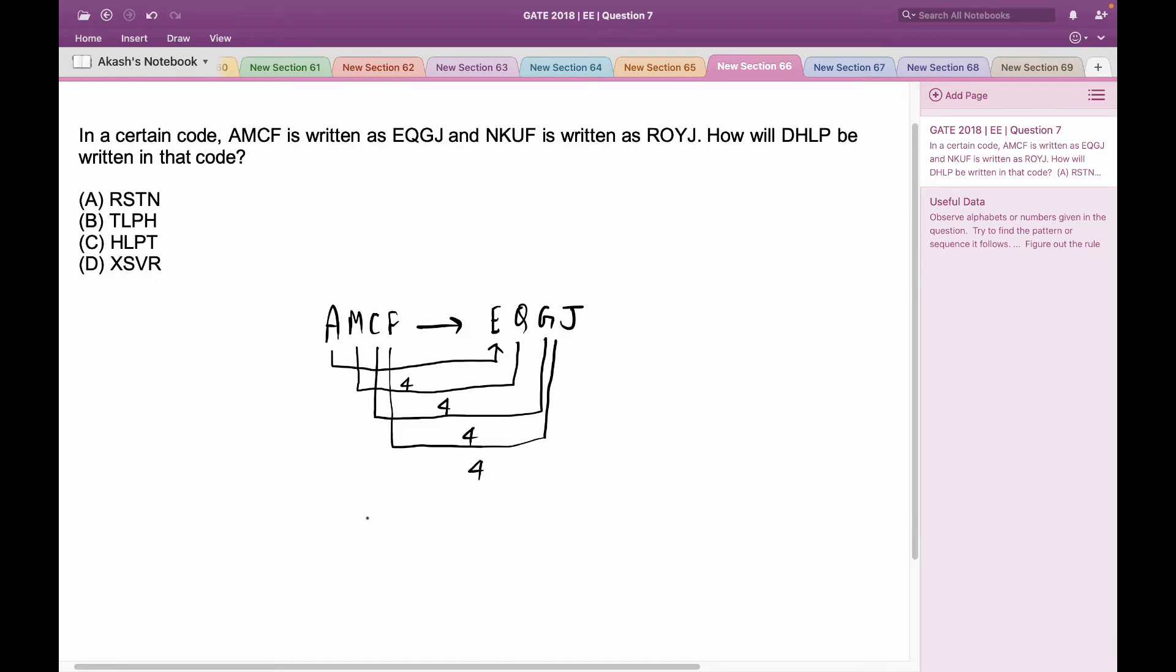Now let's use this pattern and try to see if I get the same results with the second code which is NKUF. If I add 4 characters to each of these characters I would get ROYJ. So the rule that we found out of adding plus 4 characters to each character in the code is universally true.